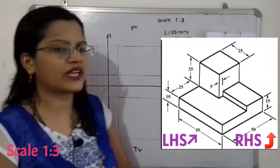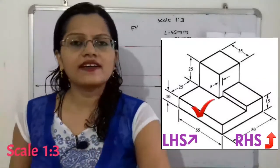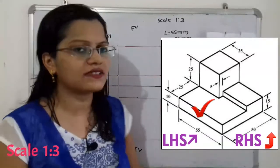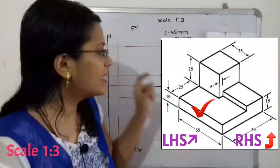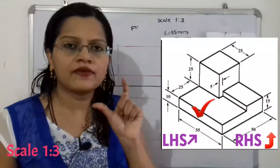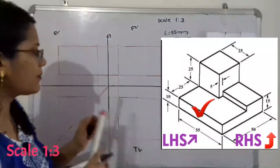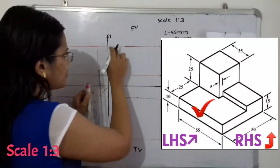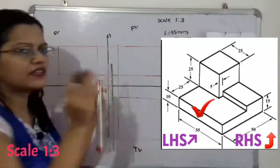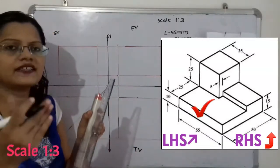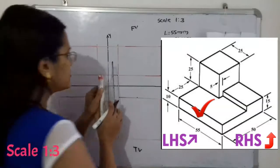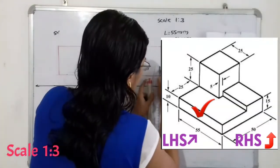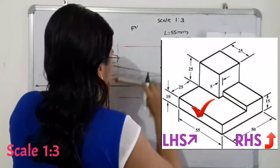When we observe the object from the front, the base construction has a height of 10 millimeters and a length of 55 millimeters. We take the height distance of 10mm, which at scale 1:3 gives 10×3 = 30mm on both sides, and complete the base construction.